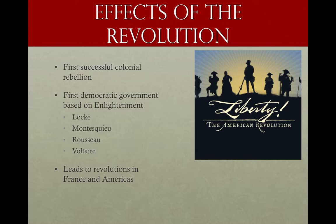The effects of the American Revolution were significant. First, this was the first successful colonial rebellion — all previous ones had been put down quite decisively, but the early Americans successfully fought back. Along with that, they created the first highly democratic government since the Greeks and Romans, basing it on Enlightenment ideas: Locke said you should be able to rebel against your government; Montesquieu said there should be three branches of government; Rousseau and Voltaire argued for freedom of speech and freedom of religion. The United States became the first true Enlightenment nation.